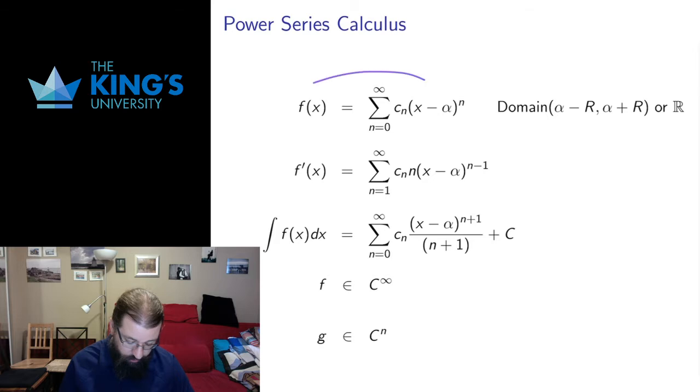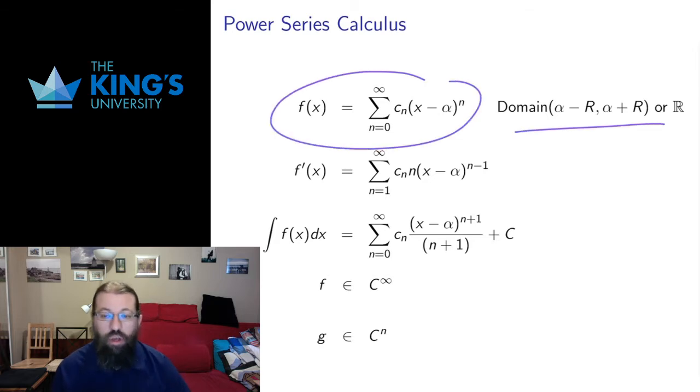So if I have an infinite series with some domain of convergence (α - r, α + r) or all real numbers if the radius is infinite, then to differentiate this I just take the derivative term by term. It's just like differentiating a polynomial. So this exponent n comes down, the new exponent is n minus 1. I start here at n equals 1 because the first term here is a constant, c₀ is a constant.